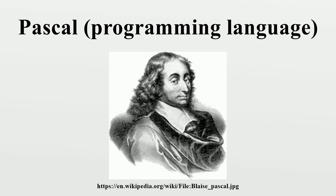The first Pascal compiler was designed in Zurich for the CDC 6000 series mainframe computer family. Niklaus Wirth reports that his first attempt to implement it in Fortran in 1969 was unsuccessful due to Fortran's inadequacy to express complex data structures. The second attempt was formulated in the Pascal language itself and was operational by mid-1970. Many Pascal compilers since have been similarly self-hosting — that is, the compiler is itself written in Pascal, and is usually capable of recompiling itself when new features are added to the language or when ported to a new environment.